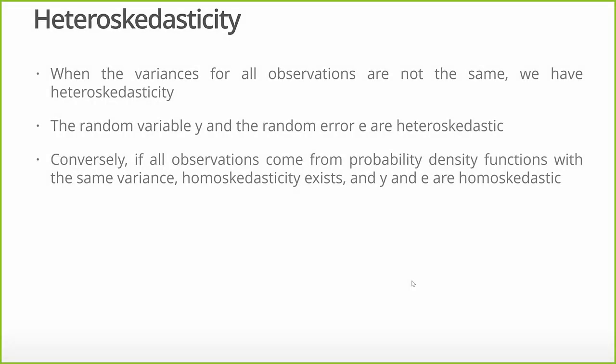Heteroscedasticity occurs when the variance of all observations is just not the same overall. As we move across something, that variance changes. The random variable y, or in particular y hat, and the random error e, are heteroscedastic if those error terms have a different variance over time. We know that y hat and e hat are going to have the same variance, and if that changes over some domain, then we've got heteroscedasticity.